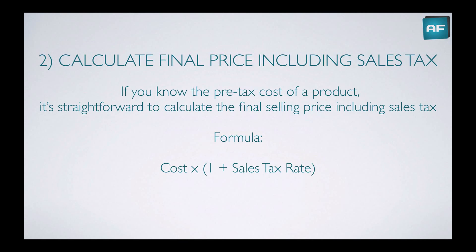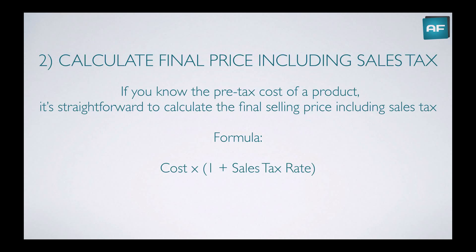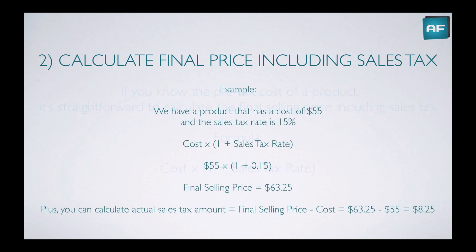Alright, calculate the final price including the sales tax. So if you know the pre-tax cost of a product, it's straightforward to calculate the final selling price that includes the sales tax. The formula is simply cost times 1 plus the sales tax rate, where cost is the pre-tax cost of the product.